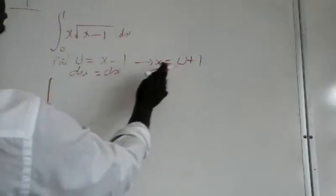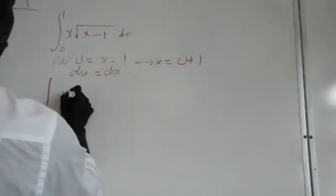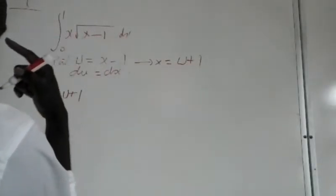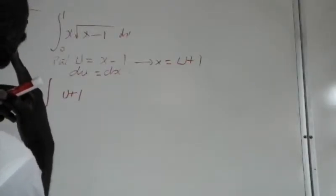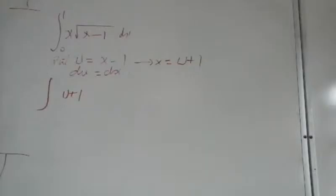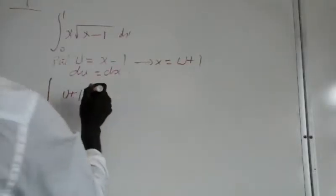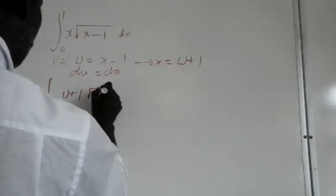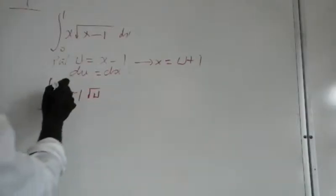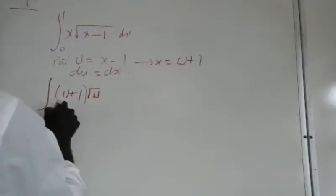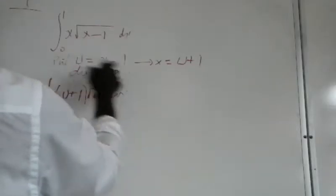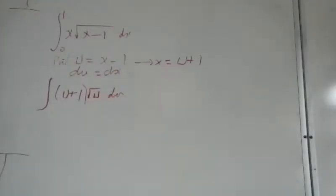Alright, u equals x minus 1. Therefore, the integral becomes the integral of x, which is u plus 1, times the square root of x minus 1, which is the square root of u. So the new problem now is the integral of u plus 1 times root u du, because dx equals du.